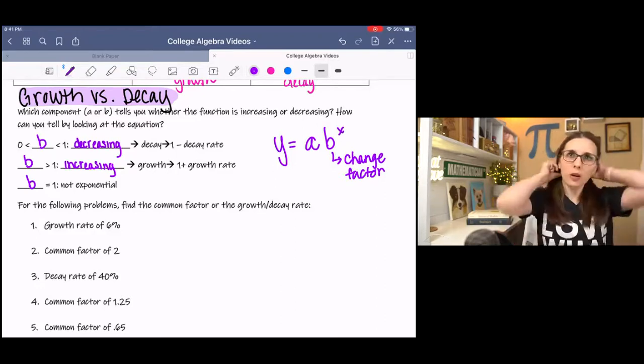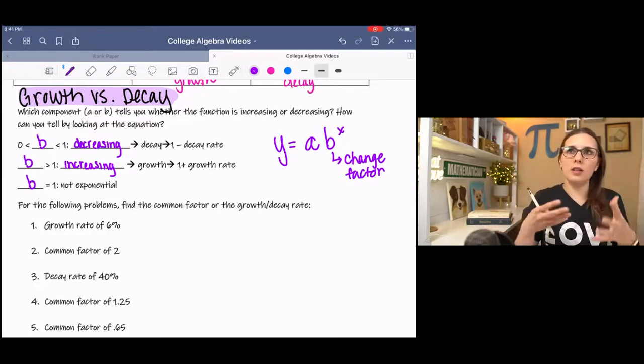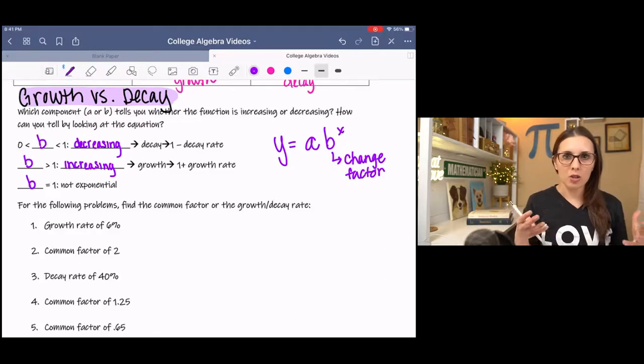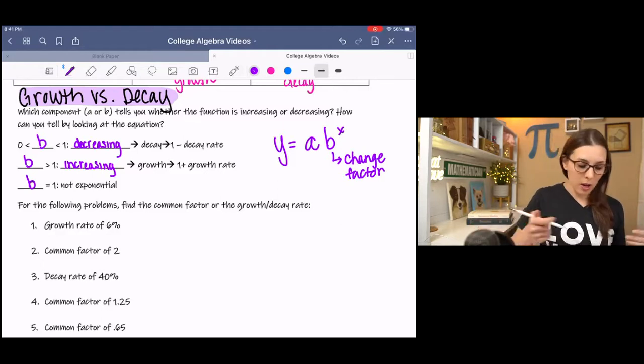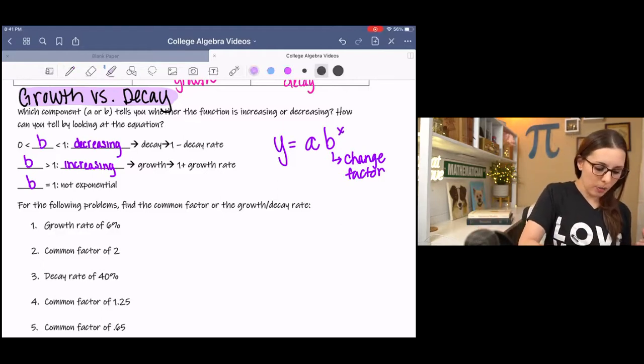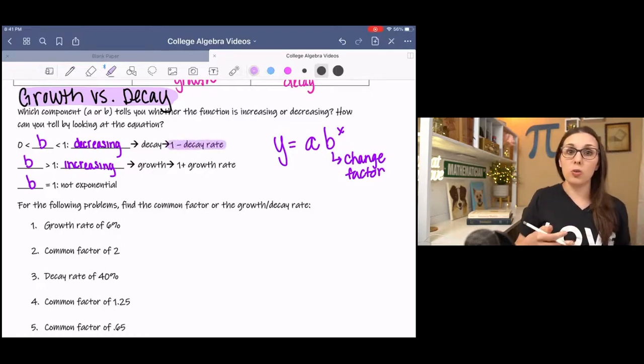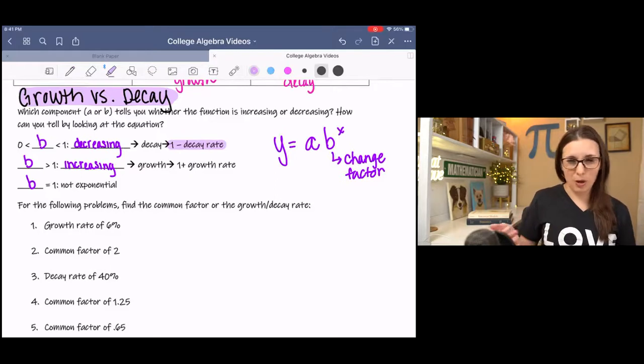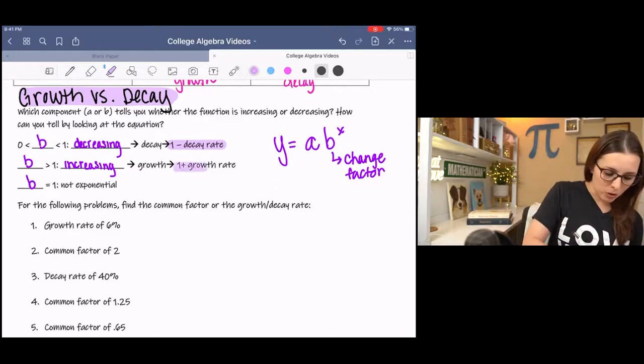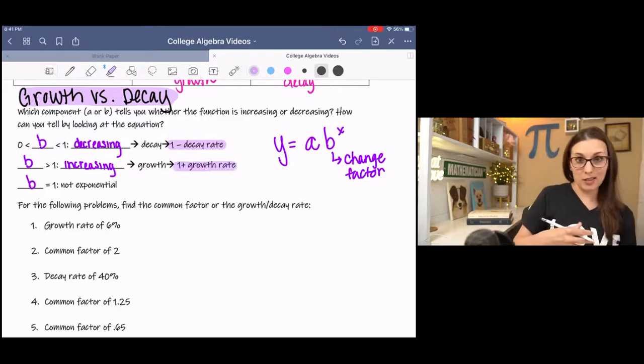And we know that 1 is kind of this baseline. So if it's below 1, it's decay, and if it's above 1, it's growth. And we use that to help us find this change factor when given a percentage. If it's decay, we're subtracting it from 1, and if it's growth, we're adding it to 1.